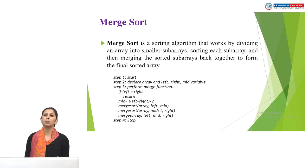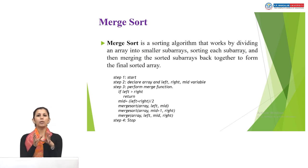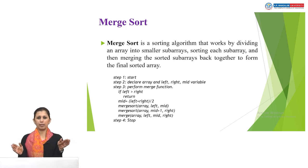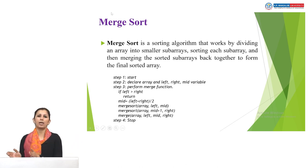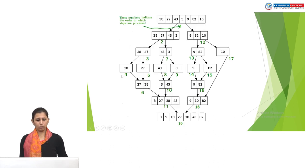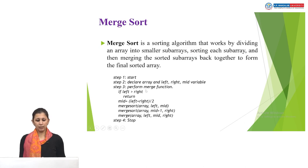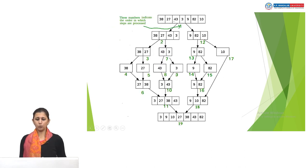Now let's look at merge sorting. In merge sort, we divide an array into two halves using the formula: mid = (left + right) / 2. We divide the array into a left half and a right half. For example, with the array: 38, 27, 43, 3, 9, 82, 10 — we split it into two halves.